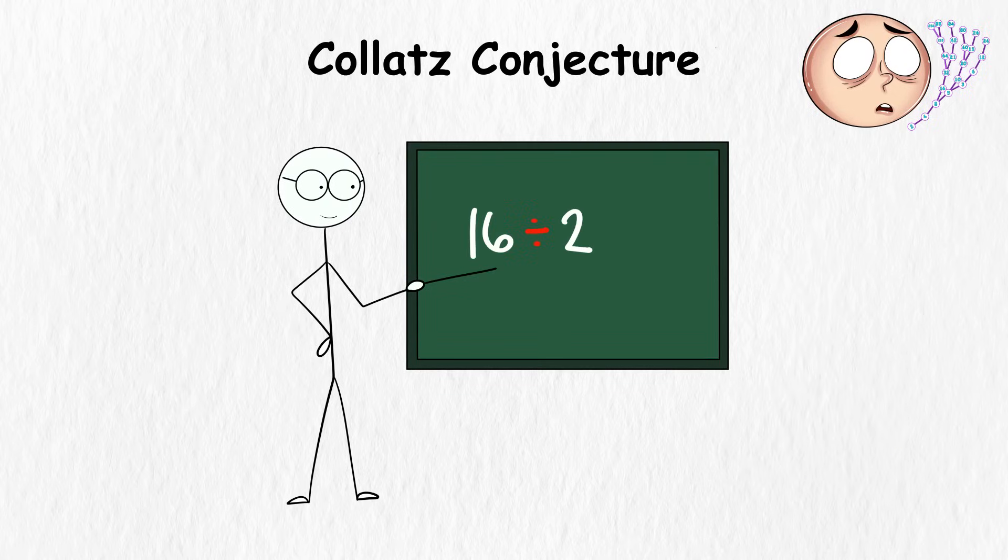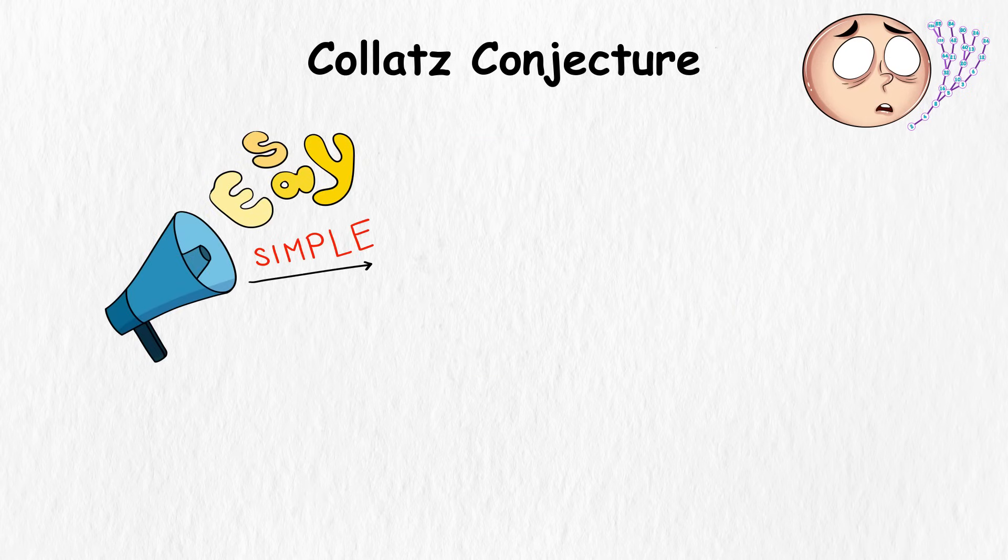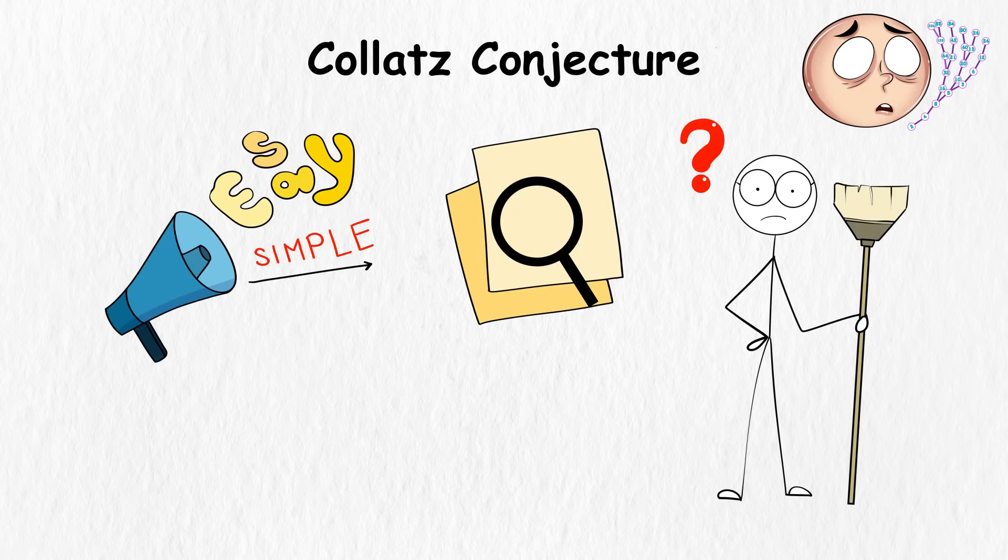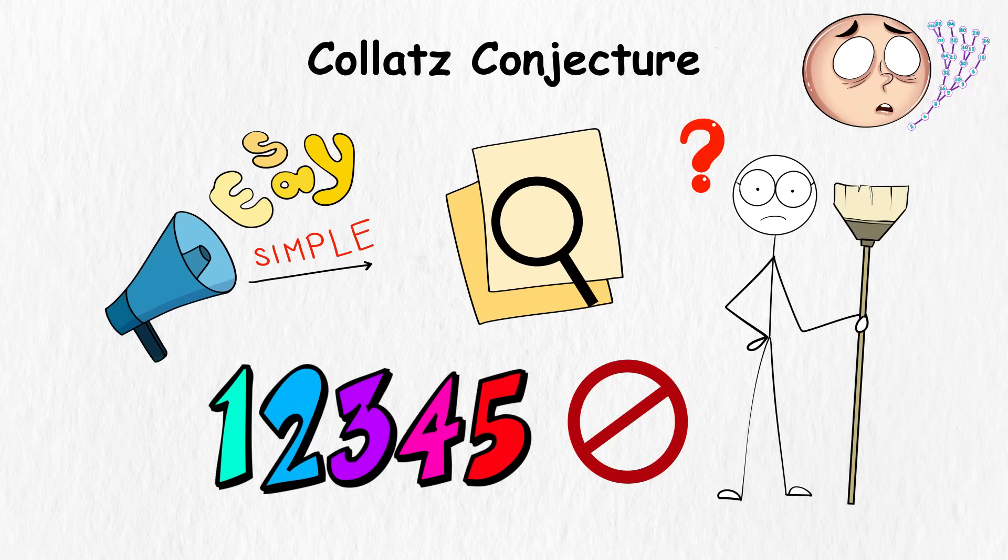For example, you have 16. You divide it by 2 to end up with 8. You divide it with 2 again to end up with 4. You divide it by 2 to get 2. From there, you divide 2 by 2 to end up with 1. It sounds easy and simple, but the problem is that nobody has been able to prove that this always happens for every single number without exception.